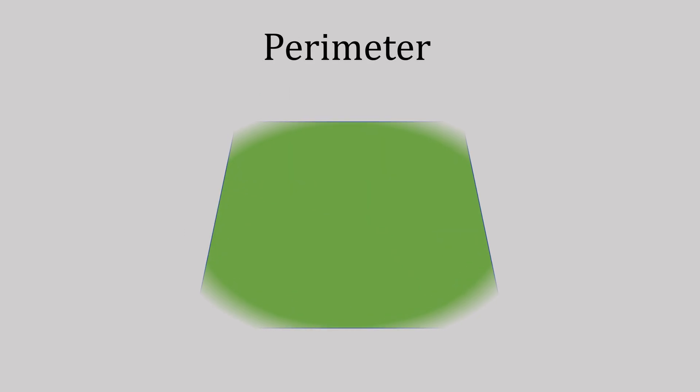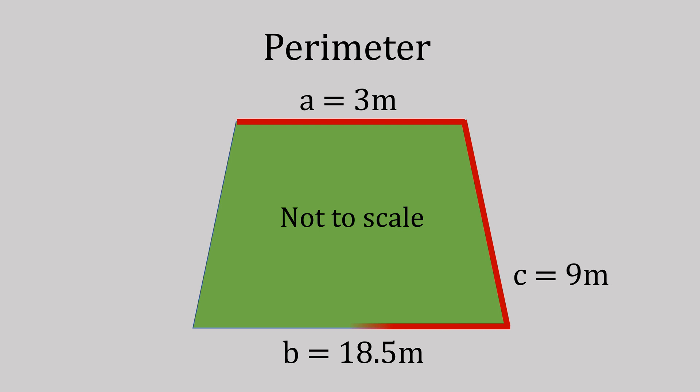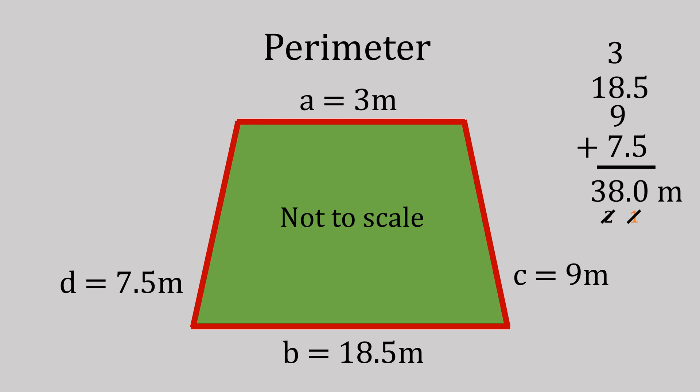Let's do another perimeter. This is not to scale. There's our a, b, c, and d: 3 plus 18.5 plus 9 plus 7.5. If you use the column method and calculate that, it gives us a total of 38 meters.